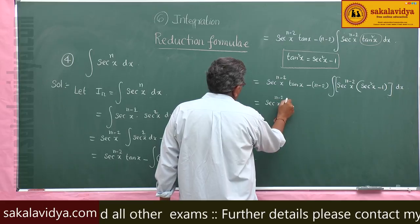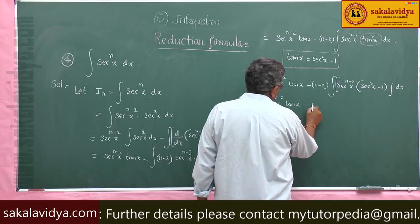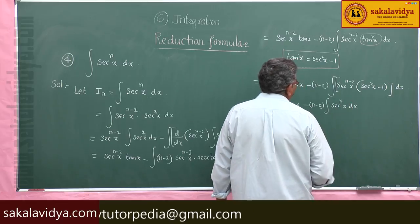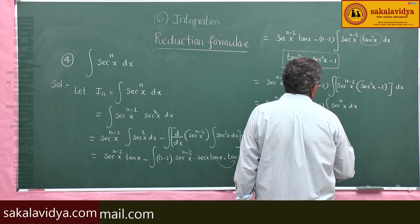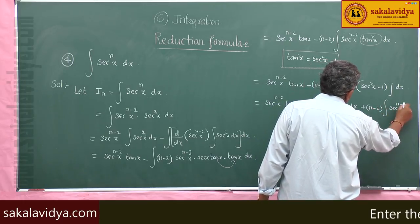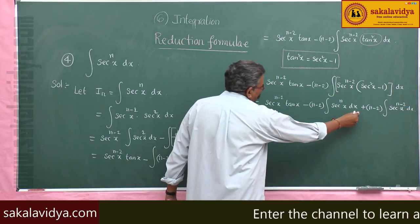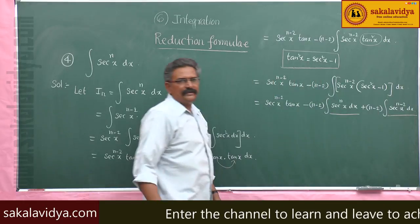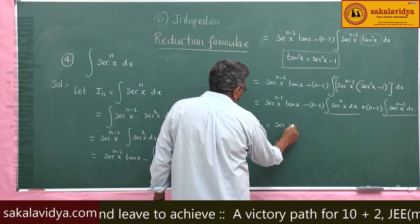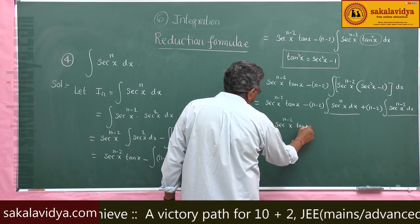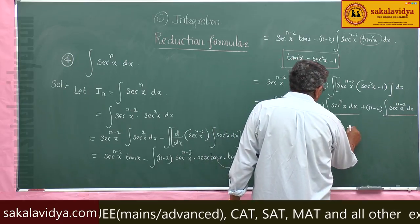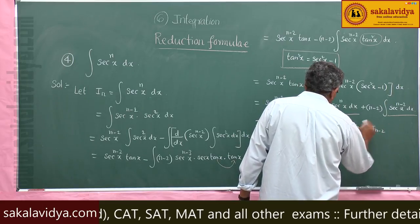Now, sec^(n-2) x tan x, minus (n-2) integral — this is sec^n x dx, minus into minus plus (n-2) integral sec^(n-2) x dx. We replace this with I_n values. So I_n equals sec^(n-2) x tan x minus (n-2) I_n, plus (n-2) I_{n-2}. Bring this side.